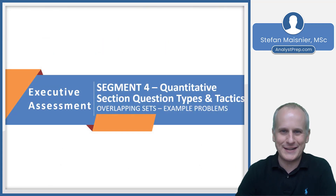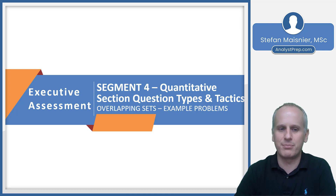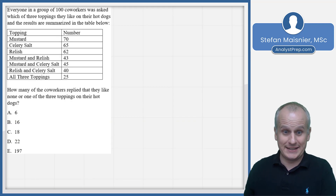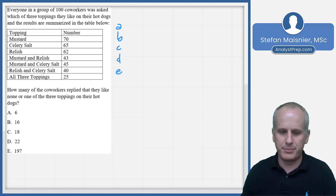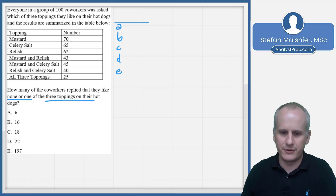Let's head to the whiteboard and look at a sample complex three-group equation problem to see how all of this can manifest itself in the Executive Assessment quantitative section. Here we have quite a table — a ton of information. We're going to set up our scratch pad for all problem-solving questions. We've got answer choices A, B, C, D, E, and we can see we're being asked for those that like none or one of the three toppings on their hot dogs. So we're looking for the number who like none or one topping.